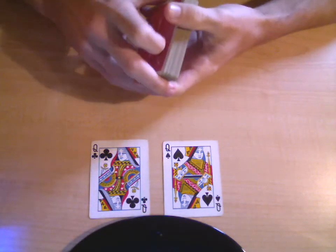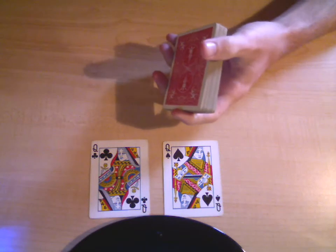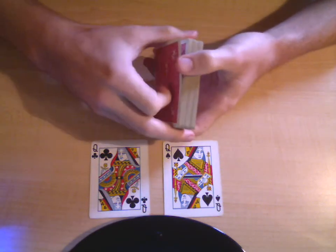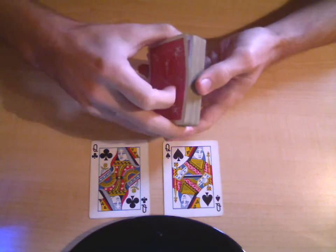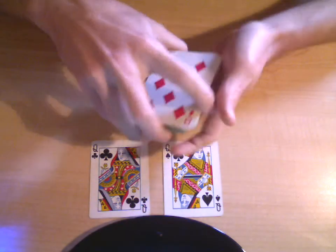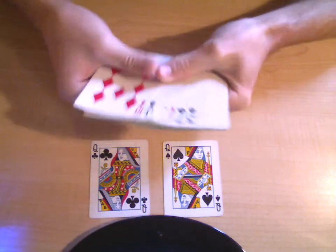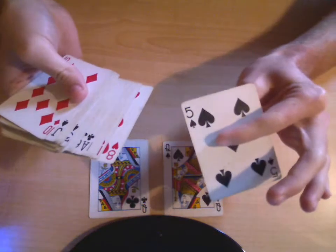And then you start off the trick by doing a Braue Reversal. You get a thumb break underneath the top card like that. And then you take half the cards and move them to the top. And take the rest of the cards and move them to the top. So all the cards are face up except for that indifferent card right there.